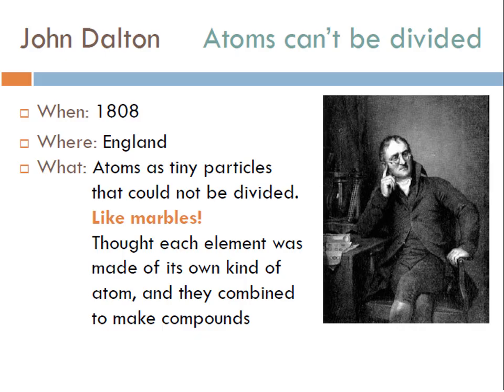Now we fast forward about 2,000 years to 1808 in England. A lot happened in the middle — alchemy, the building of America, the Black Plague, and exploring the world. Then we get to John Dalton, who thought atoms cannot be divided, that they were tiny particles almost like marbles. He thought each element was made of its own kind of atom and that they could combine to make compounds. Take a minute and draw this atomic model into your timeline for John Dalton.